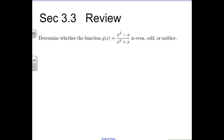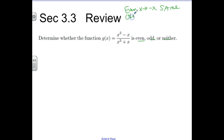Before we begin, I wanted to back up on Section 3.3. We were talking about even, odd, or neither — just do a quick little review. Remember, if a function is even, then if I replace x with negative x, I should get the same function back. If I have an odd function and replace x with negative x, I should get the opposite function. Remember the 3L rule: odd, opposite, and has symmetry about the origin.